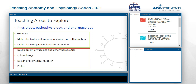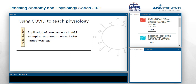Depending on your audience, you can also get into vaccine development, epidemiology, ethics, and the design of biomedical research. I'm going to be talking about using COVID — and I'll use that word to mean both the virus and the disease — and how it fits into physiology. One of the things I find most interesting is that it can be used to help students see the core concepts in physiology that we try to focus on, and they can begin to see repeating patterns as they apply to COVID.